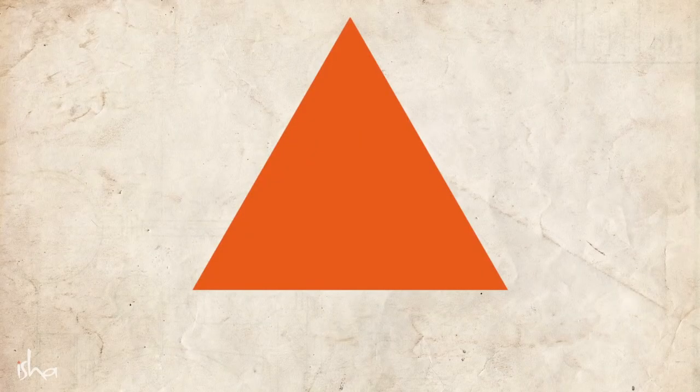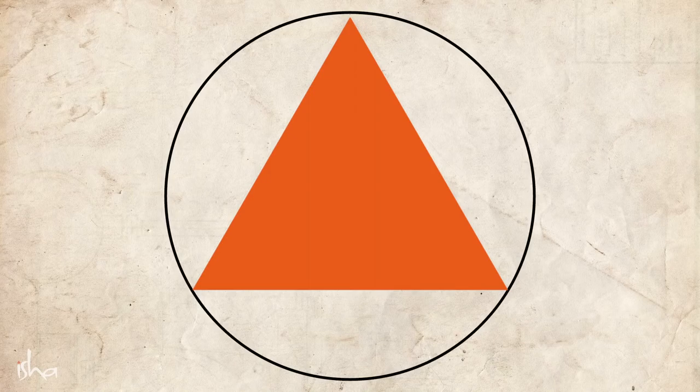What we refer to as chakras are actually triangles. The nadis always meet in the form of triangles. We call them chakras because they symbolize movement. So that orange triangle with the circle around it is the Ajna Chakra, which is the chakra of enlightenment, knowledge, knowing, and perception. Because yoga is the science of perception. Yoga is the science of ultimate perception.